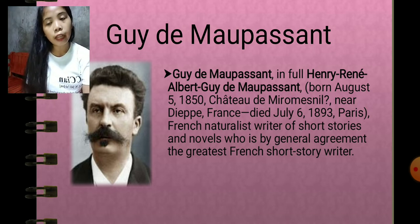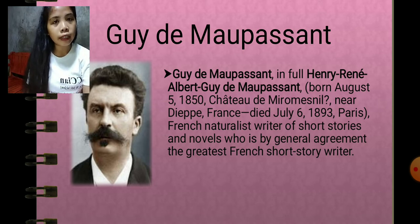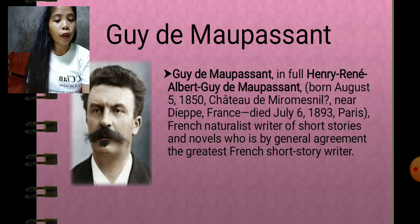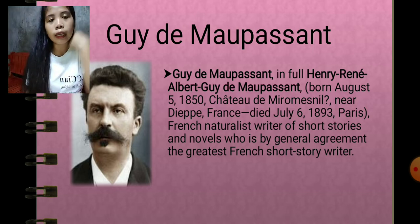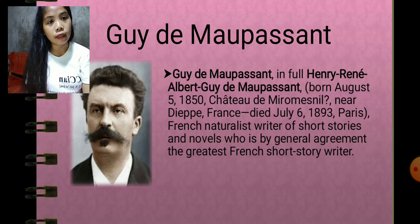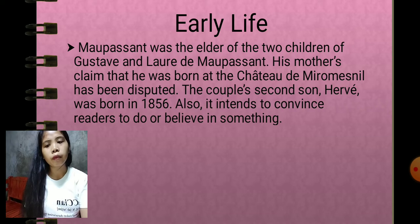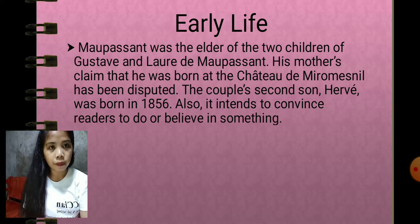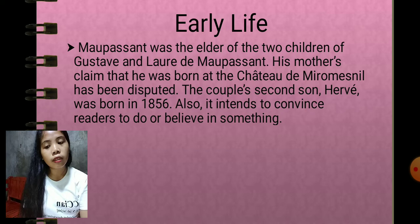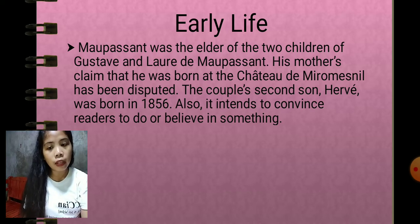While Edgar Allan Poe is more known for poetry and short stories, Guy de Maupassant is more known for short stories and novels and is considered the greatest French short story writer of his time. Maupassant was the elder of two children of Gustave and Laure de Maupassant. His mother's claim that he was born at the Château de Miromesnil has been disputed. Their second son, Hervé, was born in 1856.